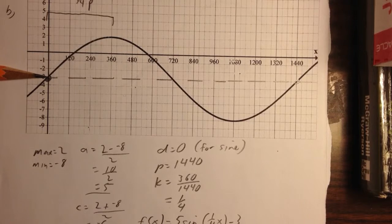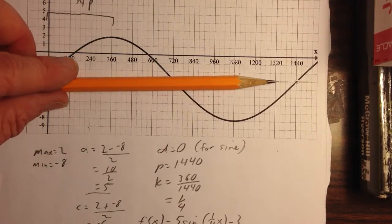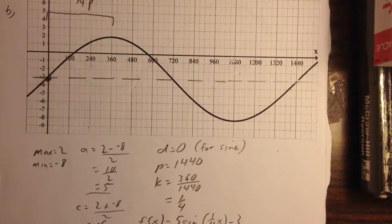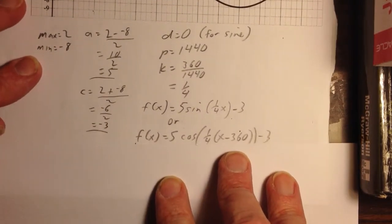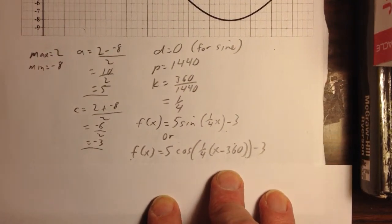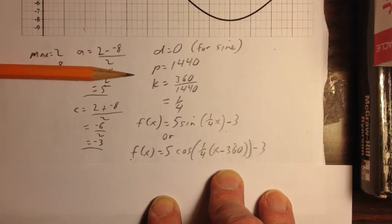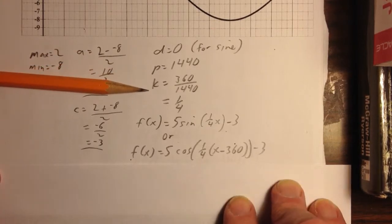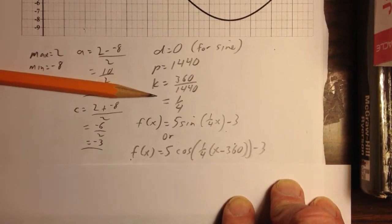And if I look at that for the period, the period works out to be 1400 degrees. My k value is 360 divided by 1440, which is 1 quarter.